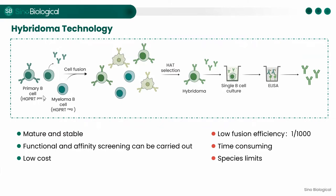First, single-cell suspensions are prepared from the immune organ, usually the spleen of an immunized animal, and fused with myeloma cells. Common fusion methods include PEG-mediated fusion and electrofusion, the latter of which shows higher fusion efficiency. Three types of cells exist in the cell fusion system: unfused spleen cells, myeloma cells, and the fused hybridoma. These hybridomas formed by B-cell myeloma fusion are obtained by HAT selection and then screened with ELISA to obtain positive clones. Further dilution and screening yield immortalized monoclonal hybridomas that stably produce single antibodies.